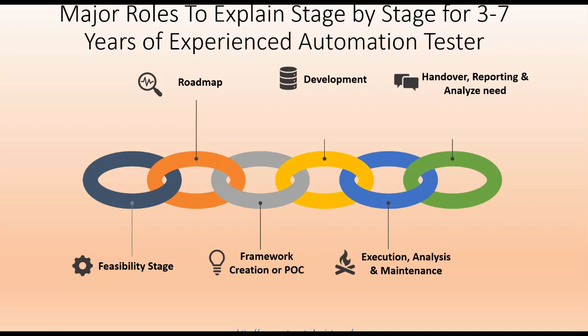The sixth phase is handover, reporting, and analyze need. You hand over all automation test scripts to the manual team members so they can start execution and provide feedback, and you address their feedback and questions. For reporting, you provide graphical analysis, graphical reports, and HTML reports understandable to all stakeholders and management. For analyze need, as a senior automation tester you identify whether security testing, performance testing, accessibility testing, or usability testing is needed in the project.